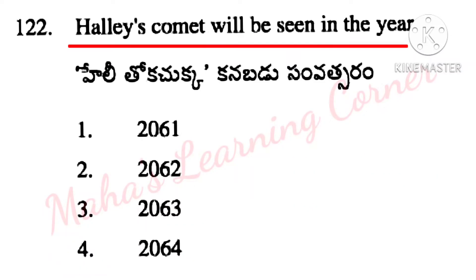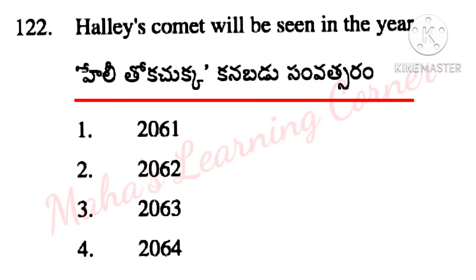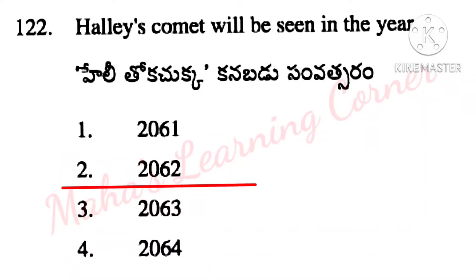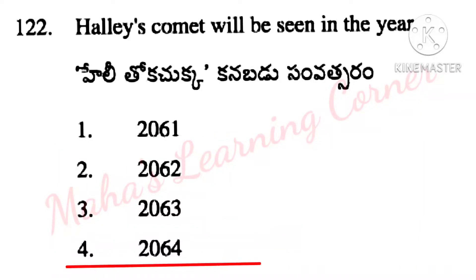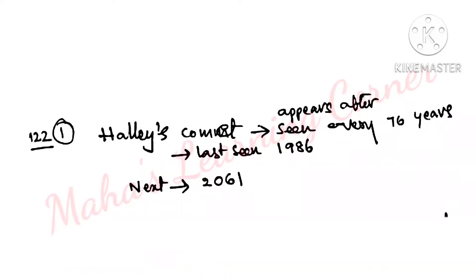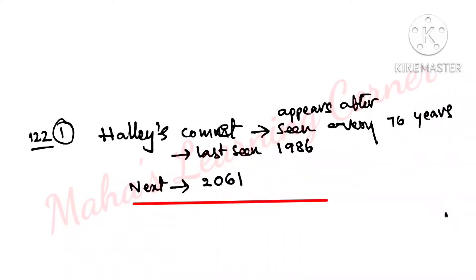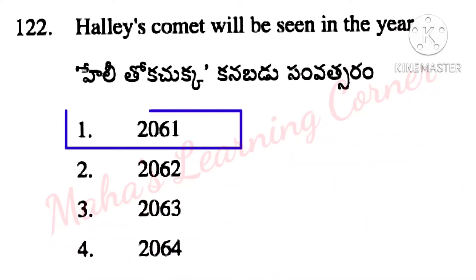Halley's Comet will be seen in the year — Options: 2061, 2062, 2063, 2064. Halley's Comet is seen every 76 years. Last seen in 1986. Next, it will be seen in 2061. So correct answer is Option 1 — 2061.